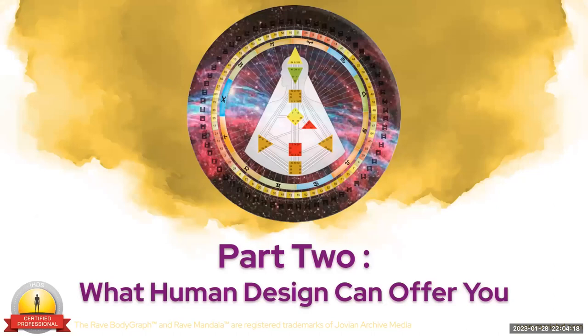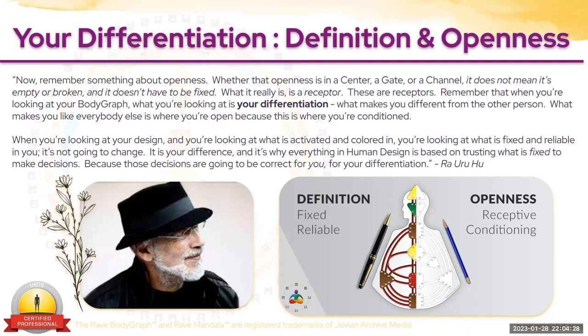Part two — what human design can offer you. Remember something about openness, whether in a center, a gate, or a channel: it does not mean it's empty or broken, and it does not have to be fixed. What it really is, is a receptor. When you're looking at your body graph, you're looking at your differentiation — what makes you different from the other person. What makes you like everybody else is where you're open, because that's where you're conditioned. What is activated and colored in is what is fixed and reliable in you — it's not going to change. Everything in human design is based on trusting what is fixed to make decisions, because those decisions are going to be correct for your differentiation.